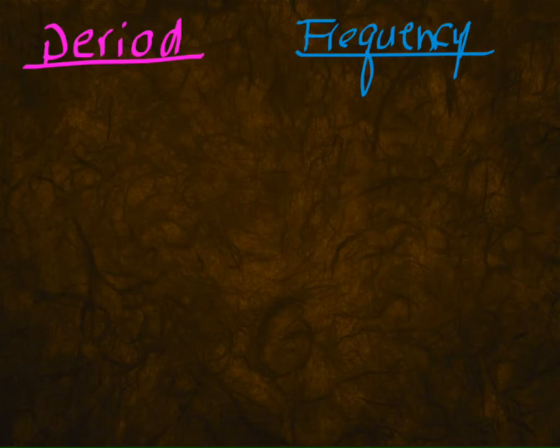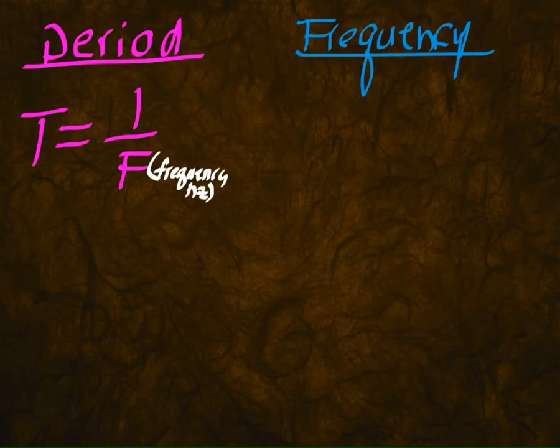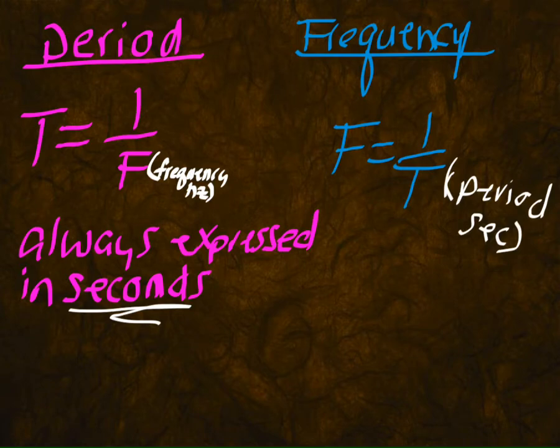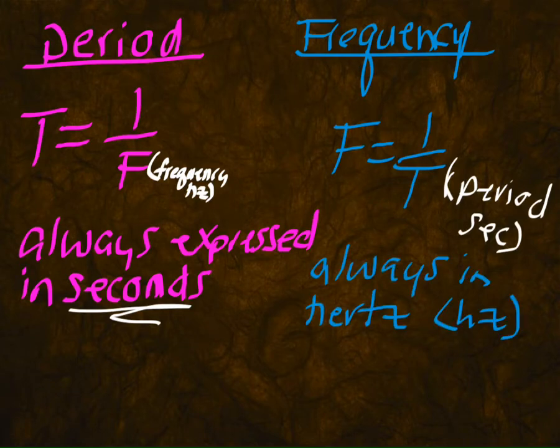Next — period. What is the period? Here is the formula. We just talked about what a period is. Here is the formula for period: T equals one over F. And here's the formula for frequency. You're going to be implementing these very shortly. Period is always expressed in seconds and frequency is always expressed in Hertz.